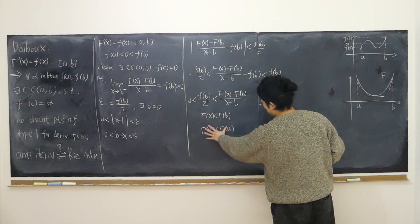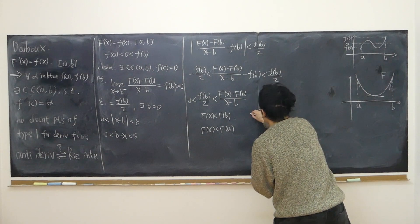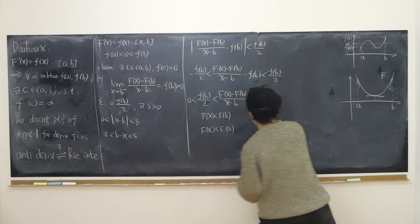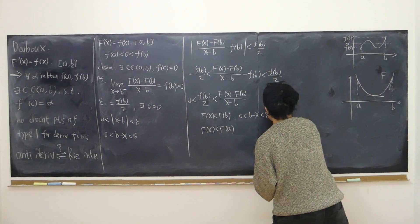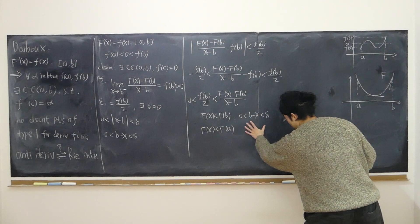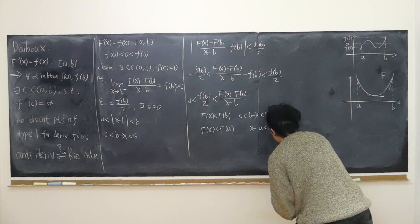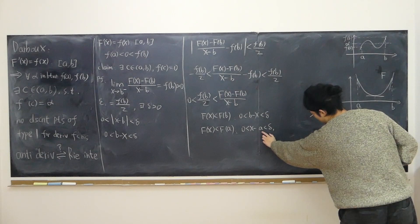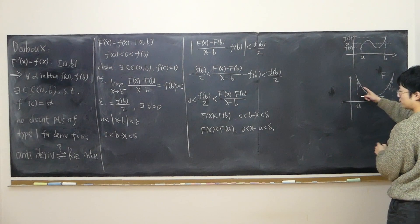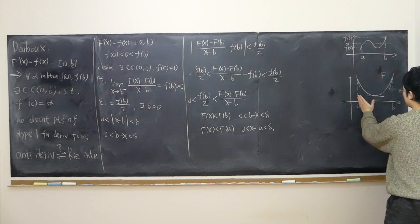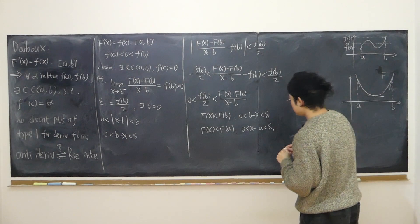For all x's in the deleted neighborhood of b (b − x > 0, < delta) and for all x's in the deleted neighborhood of a (x − a > 0, < delta one, approaching from the right), the inequalities apply. Therefore, the minimum value must be taken somewhere other than a or b, if it can be taken.